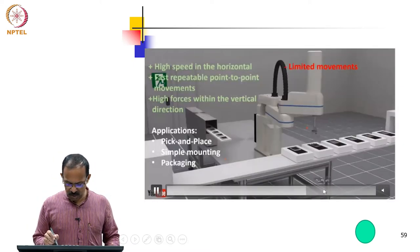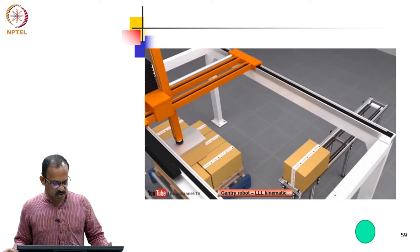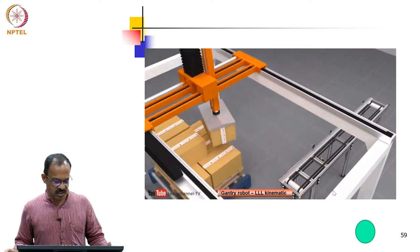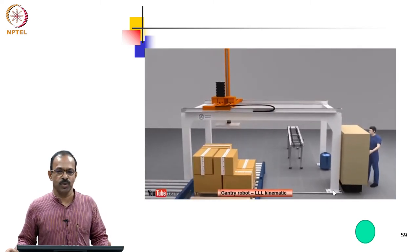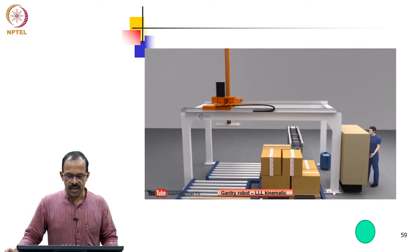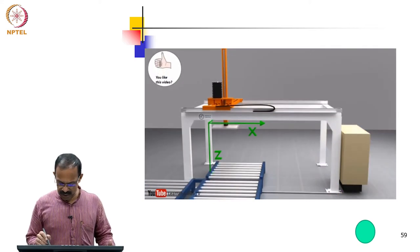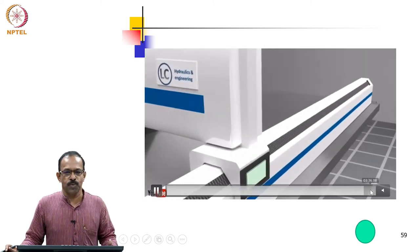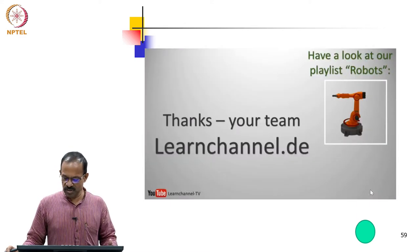The third one uses three prismatic joints, which we call the Cartesian robot. Cartesian robots are again used for pick and place applications. The only difficulty is that the space required for them is large compared to their workspace. However, they are very easy to control because all three motions are in X, Y, Z axes. You will be seeing this kind of robot in many industrial applications.